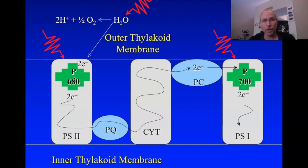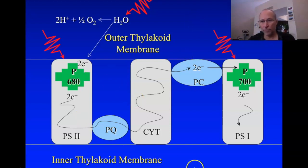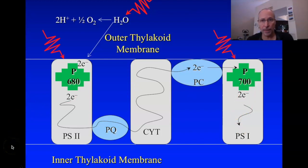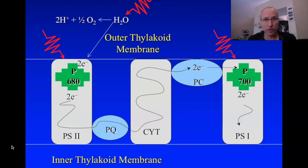So that's how the energy from light is harvested and how the electrons are all accounted for. There's one other thing we have to do — account for the electrons oxidized off P700. And then we need to see how the whole purpose of this captures that energy in the form of ATP and NADPH. That's our next step.